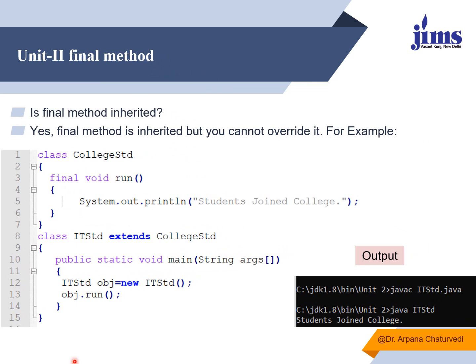Let's see one more example — here we are explaining whether a final method is inherited or not, and if inherited, can you override it? We have already seen that you cannot override. Now I am using a program with a final method. A final method can be inherited but cannot be overridden. The parent class is CollegeStudent and I am deriving a class IITStudent from it. I will make the object of the derived class and call the function run.